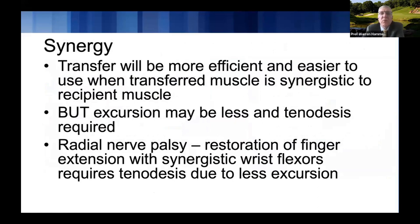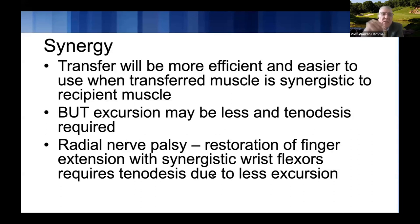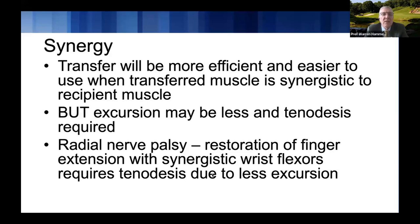Synergistic motion is important in a tendon transfer. A transfer will become more efficient and easier to use when it's a synergistic muscle. A wrist flexor and a finger extensor are synergistic — when we straighten our fingers, we often bend the wrist; when we go into grip, we bring the wrist into extension. Most patients learn synergistic transfers fairly easily. However, excursion is less and tenodesis is required, since wrist flexors and extensors only have about 30 millimeters of excursion, while you need 50 for digital extensors and 70 for digital flexors.